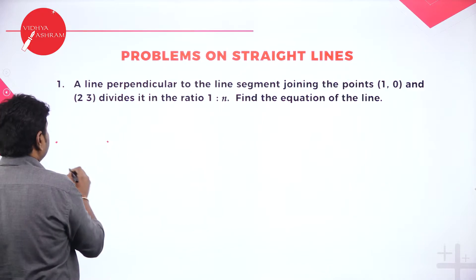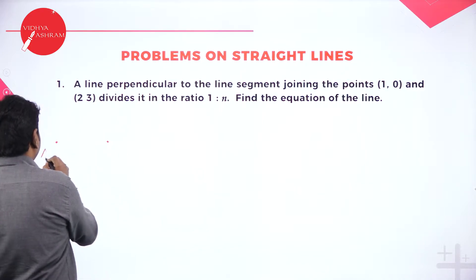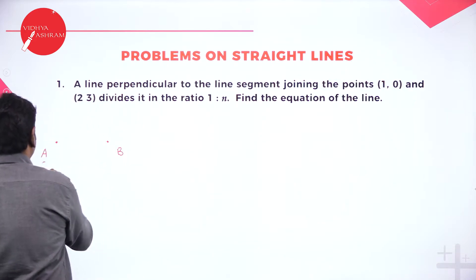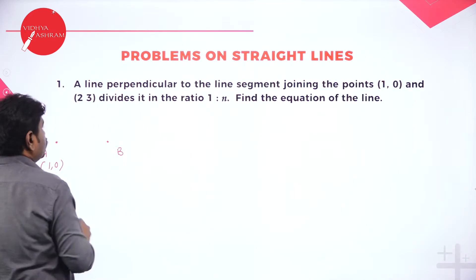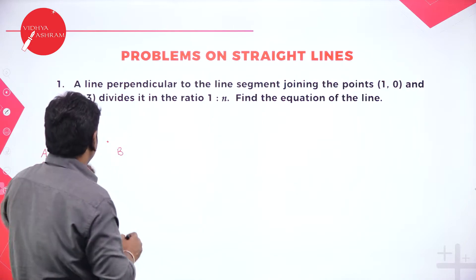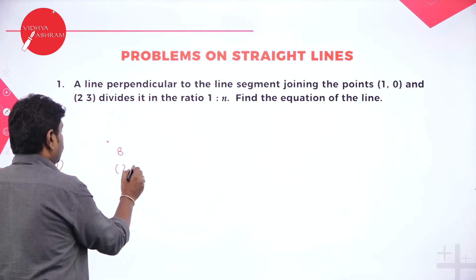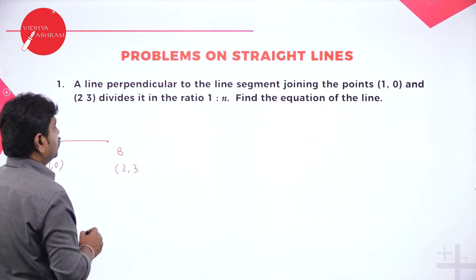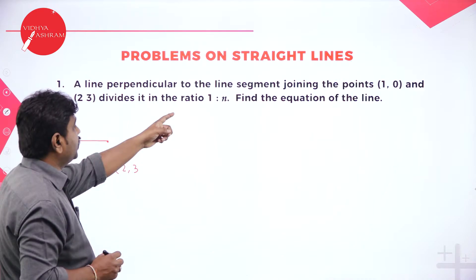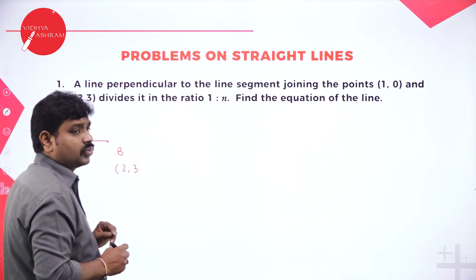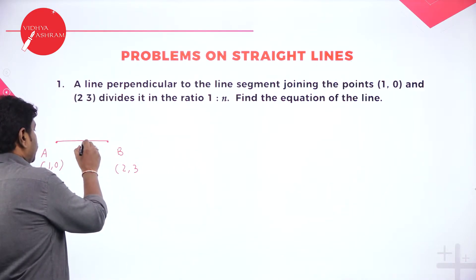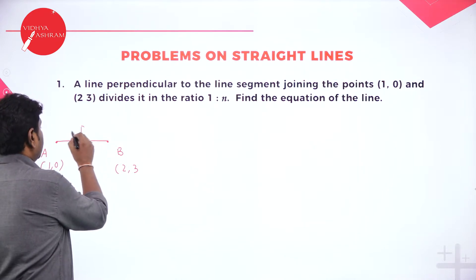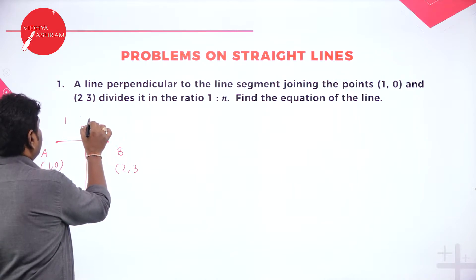They gave two points — I call them A and B. A is (1, 0) and B is (2, 3). They want a line perpendicular to AB, and this line divides AB in the ratio 1 is to N. So I need to find a line that is perpendicular and passes through the point that divides AB in the ratio 1:N.